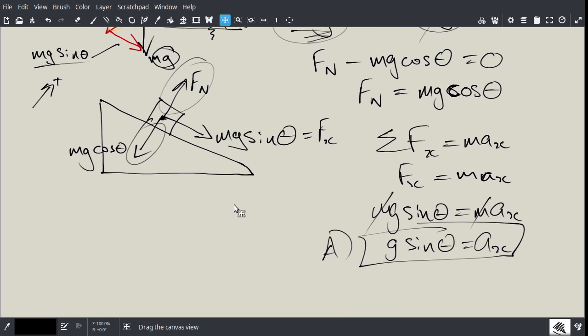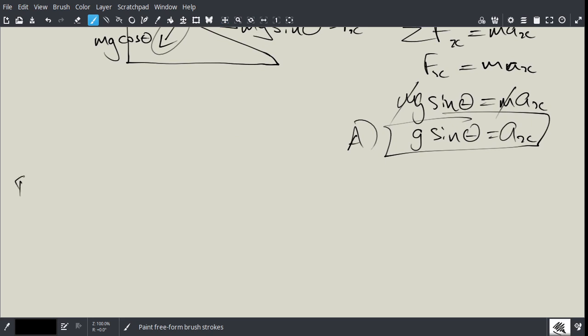Okay so the next question, part B, asks if the block was starting up here and it says starts at, from rest, 12 meters up the plane from its base, what will the blocks, what speed will it reach at the bottom of the incline? So essentially what we've got is we've got, okay, from here to here is 12 meters...